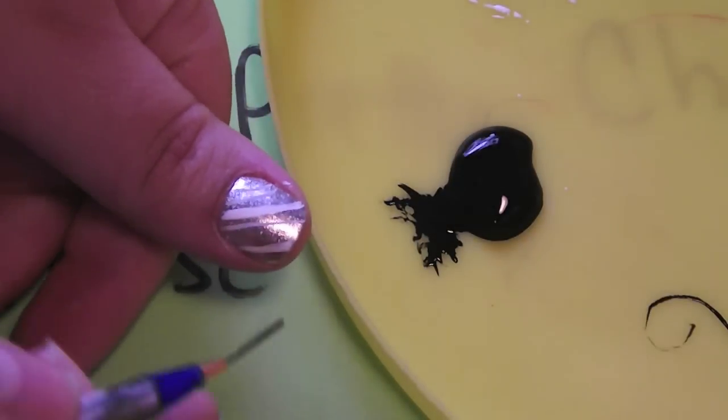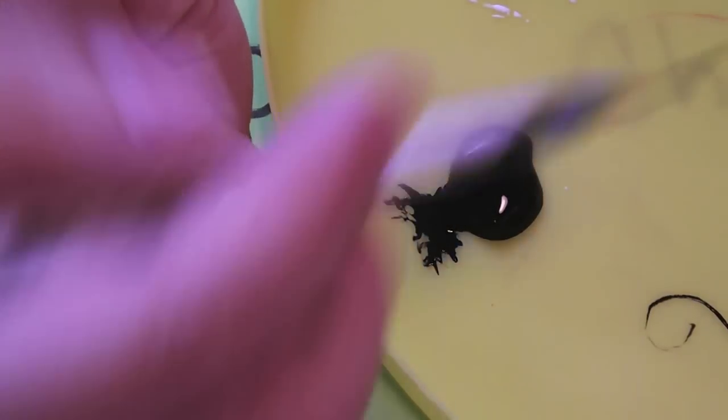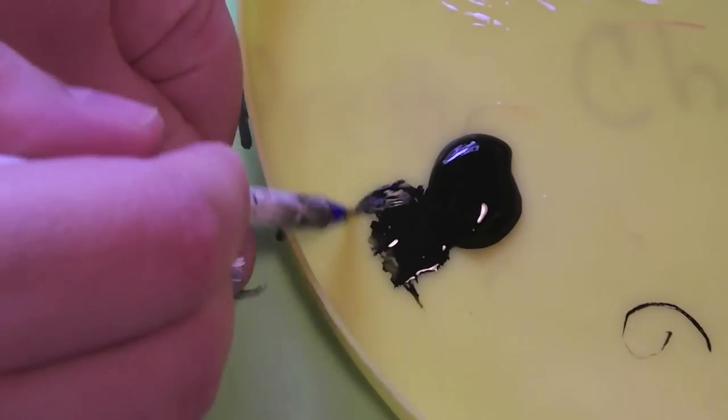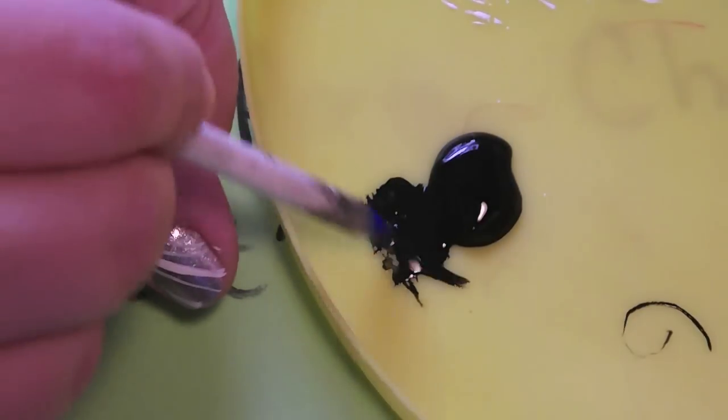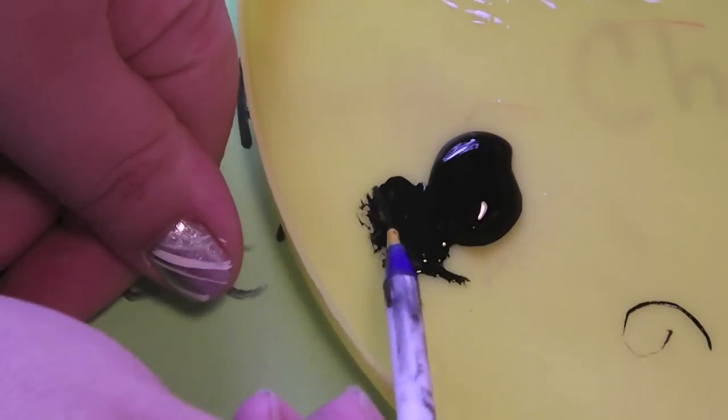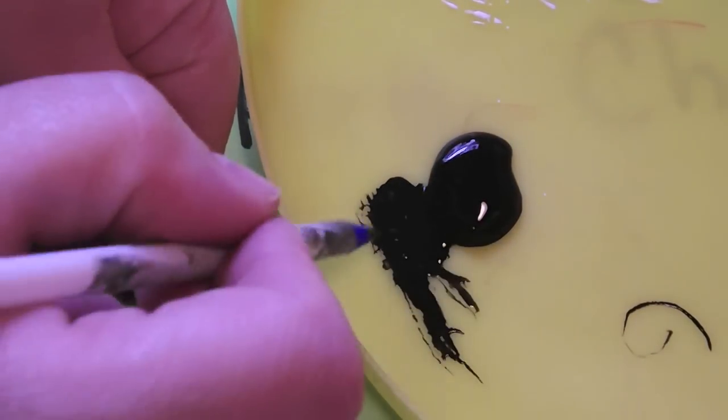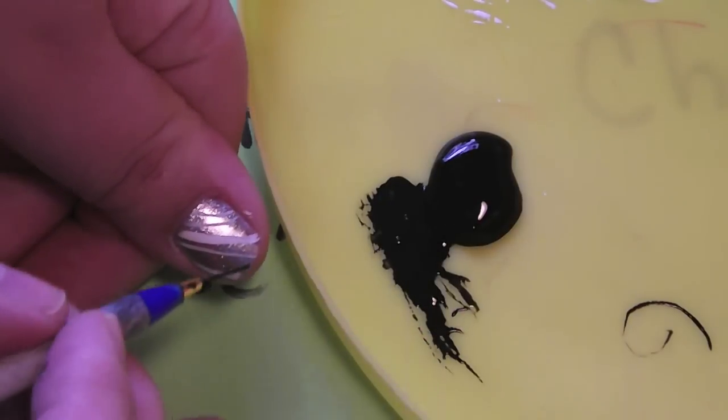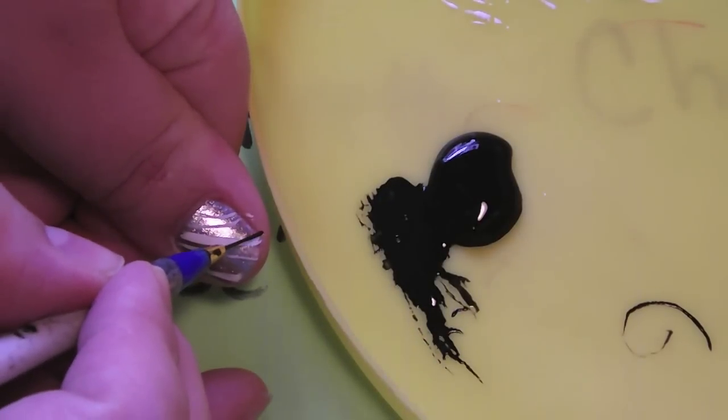So once your paint has had a chance to dry, what you're going to do is you're just going to go in and draw. I'm going to thin this out a little bit so it's easier to work with. I'm just going in with a shorter striper and you're just going to go in and create a line that goes through one side of your nail to the other.